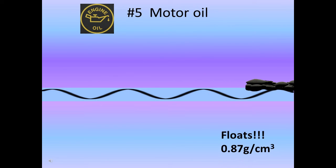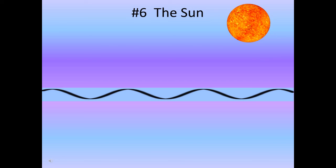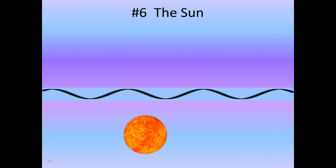Motor oil floats — it has an average density of 0.87 grams per centimeter cubed, less than pure water's 1 gram per centimeter cubed. Surprisingly, the sun would actually sink! Our sun has a density of 1.41 grams per centimeter cubed — more dense than pure water. Of course, it would boil off all the water before getting there, but technically it would sink.